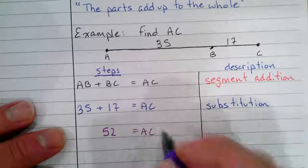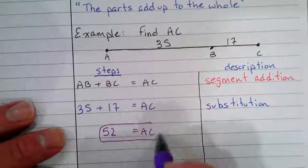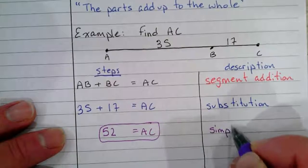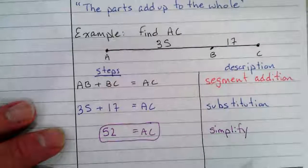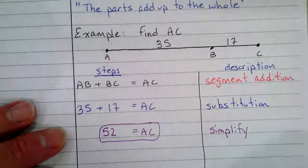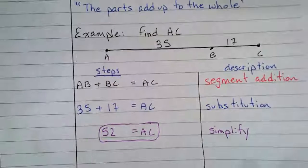Okay, next: well, 35 plus 17—see, 35, 45, 55—52 equals AC. That's our answer, and all we did here was simplify. Right, there's our first example. We'll do one more on the back side.